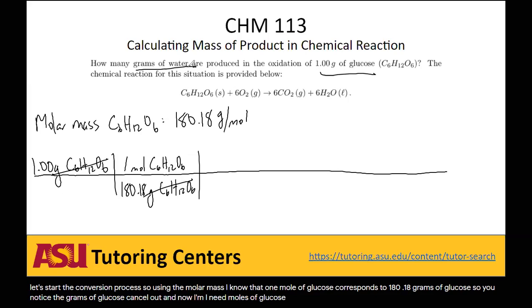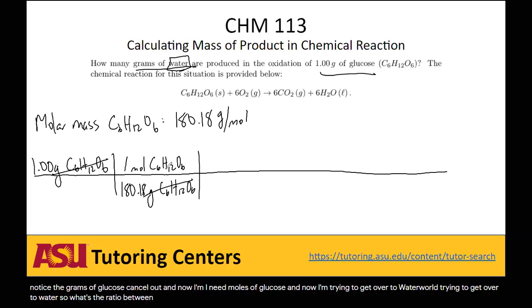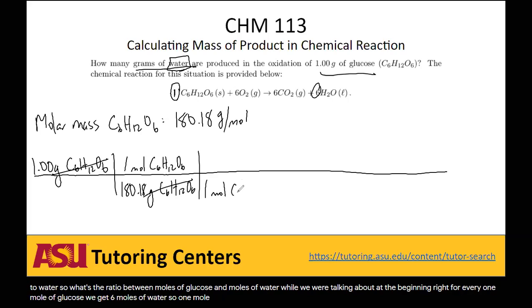And now I'm trying to get over to water. So what's the ratio between moles of glucose and moles of water? Well, that's what we were talking about at the beginning. For every 1 mole of glucose, we get 6 moles of water. So 1 mole of glucose corresponds to 6 moles of water.